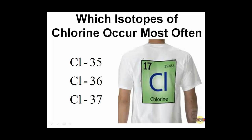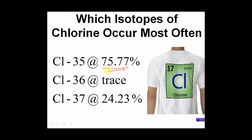Here's one more example — which isotope occurs most often in nature? This element has 17 protons and an average mass number of 35.453. My question: which isotope occurs most in nature? I predict chlorine-35 appears most in nature simply because 35.4 is closest to 35. The isotope with mass number 35 is most abundant because 35 is closest to 35.453. Chlorine-35 does indeed occur most in nature, at about 75% of the time.